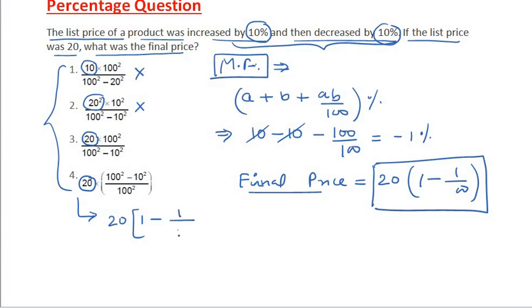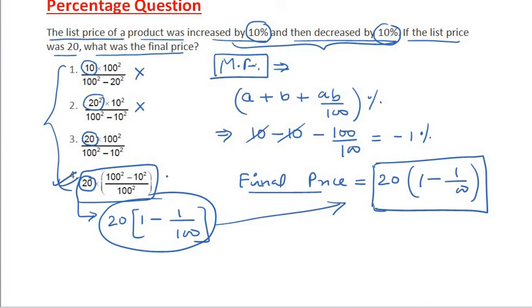So if you simplify option number 4, it is same as our final price which we have written here. It means option 4 is the correct answer, or it is the correct way of writing the final price. So option 4 is the final answer of this particular question.